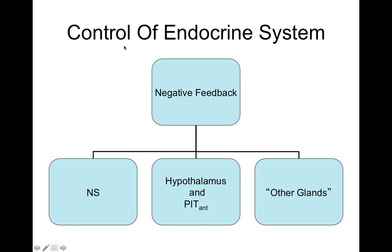To control the endocrine system — in A&P 1, we talked a lot about homeostasis and negative feedback — a lot of times our endocrine system is controlled through negative feedback. Whatever the desired effect of the hormone is, let's say it's to decrease blood calcium: when blood calcium falls below a certain level, the hormone that was being released to decrease blood calcium will stop being released.